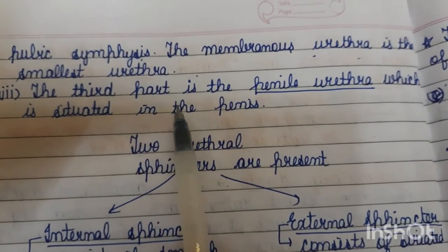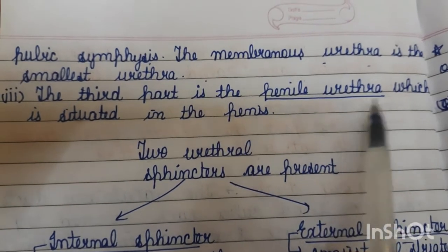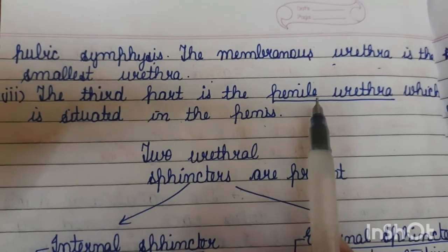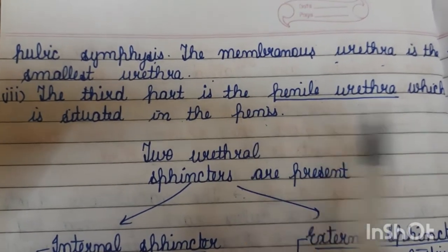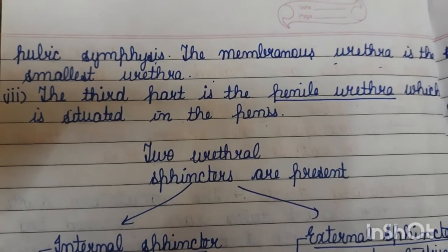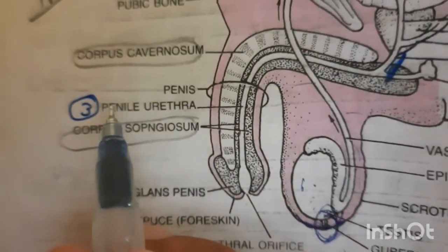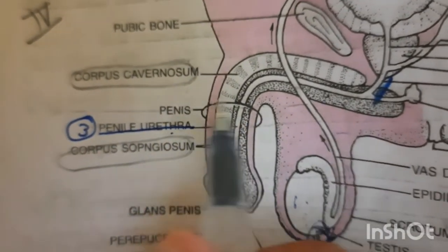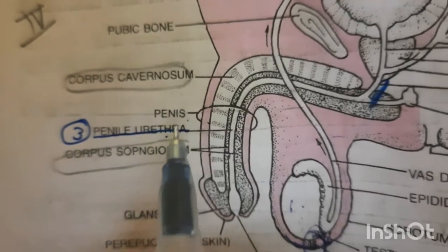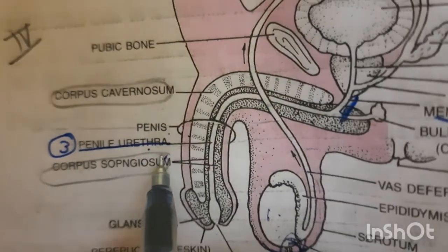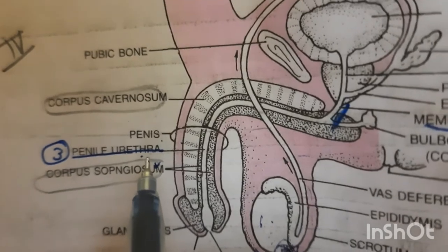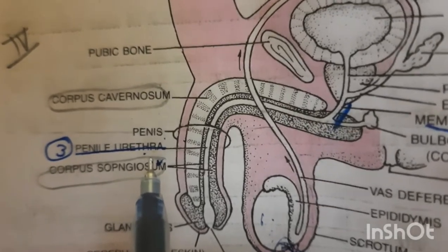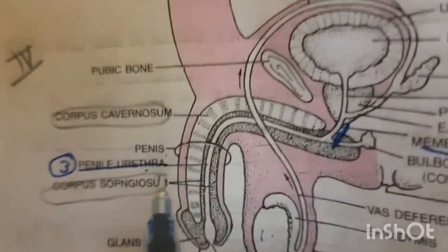The third and last part of the urethra is the penile urethra, which is situated within the penis. To summarize: the urethra present in the penis is the penile urethra; the urethra surrounded by the prostate gland is the prostatic urethra; and the smallest part situated behind the lower part of the pubic symphysis is the membranous urethra.